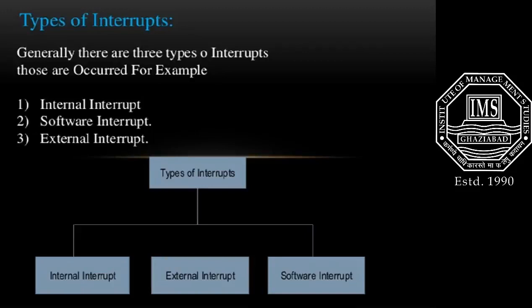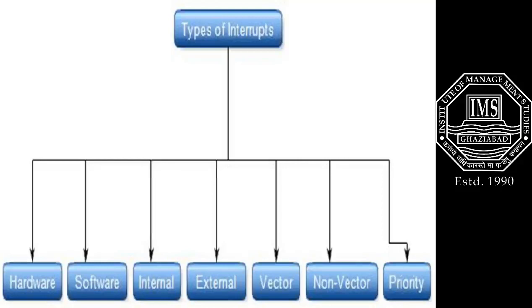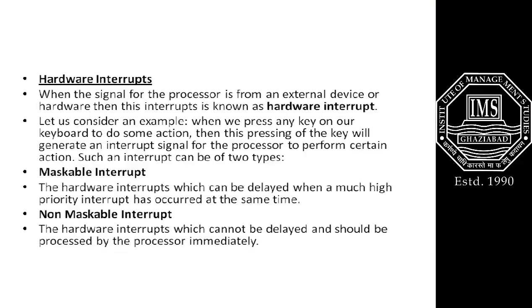There are various types of interrupts. Broadly, we can classify them as: internal and external interrupts, software interrupts, hardware and software interrupts, vector and non-vector interrupts, and priority interrupts. Considering hardware interrupts first: when a signal to the processor comes from an external device or hardware, that interrupt is known as a hardware interrupt. For example, when we press any key on a keyboard, that key press generates an interrupt signal to the processor.